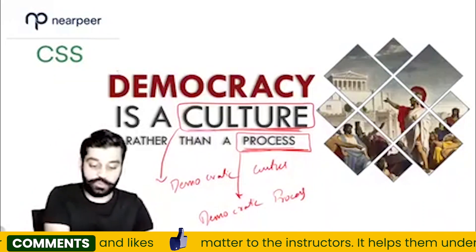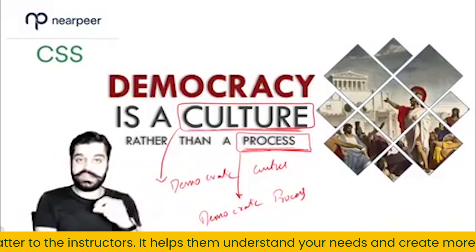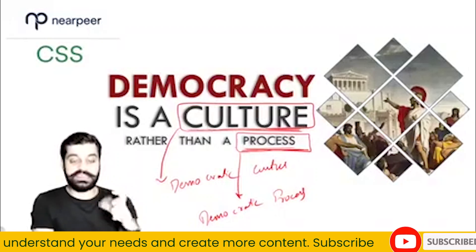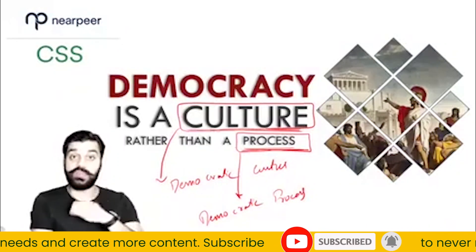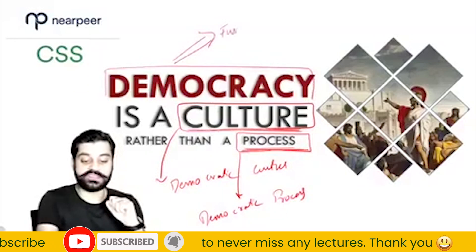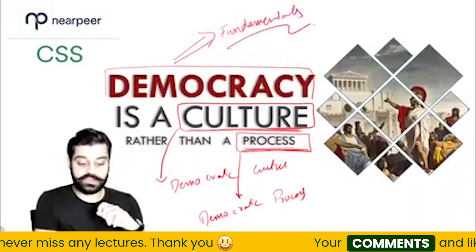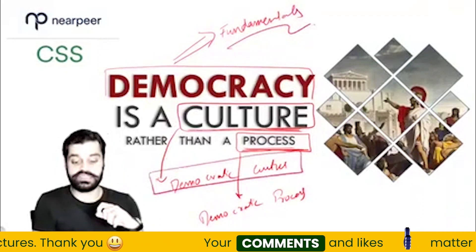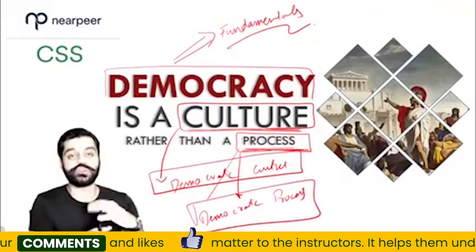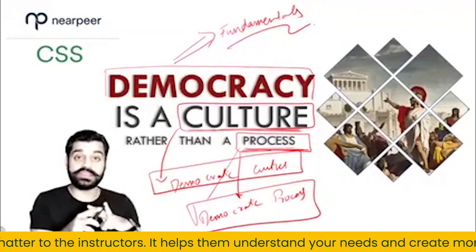Then we need to explain that the topic is saying democracy is democratic culture — it is not just the name of a democratic process. This means democratic culture has greater importance within democracy. To prove this, we will show that the fundamentals and promises of democracy can be achieved through democratic culture, while through democratic process alone those promises cannot be achieved. So we will explain democratic culture, democratic process, how they differ, and then the ideals and promises of democracy as seen historically.